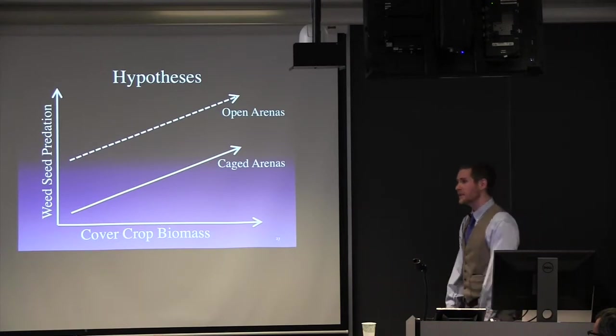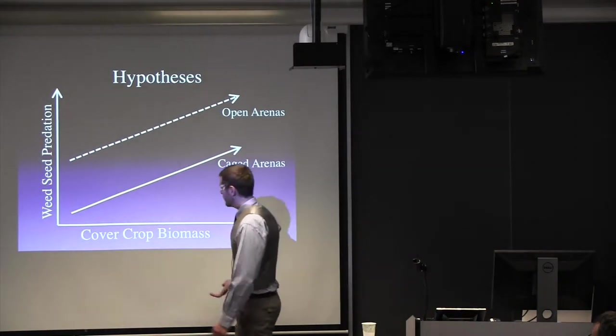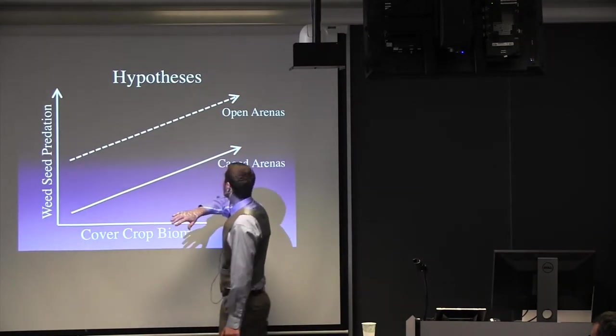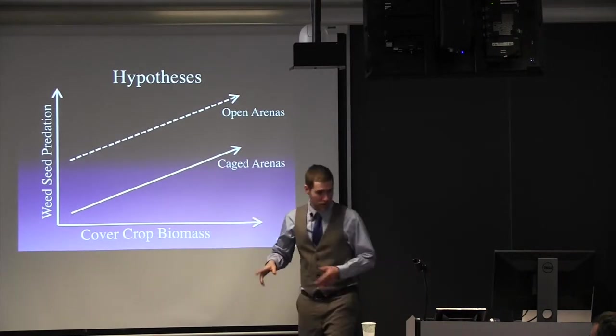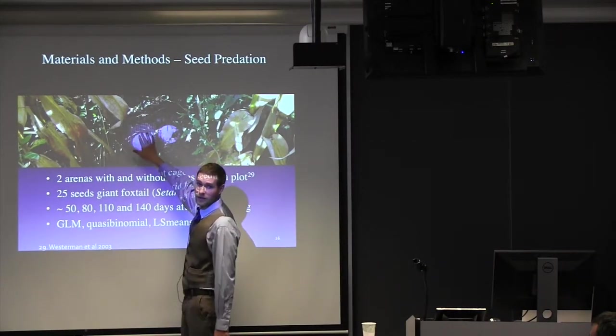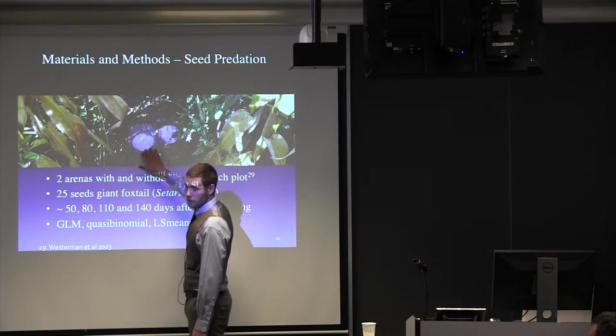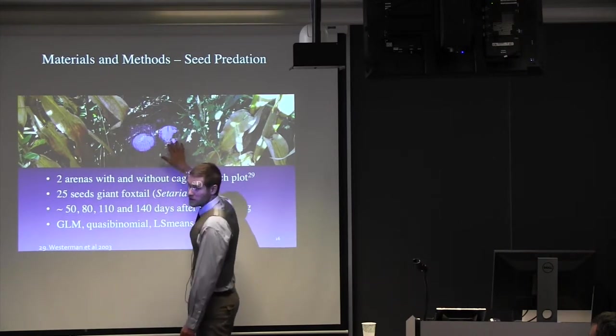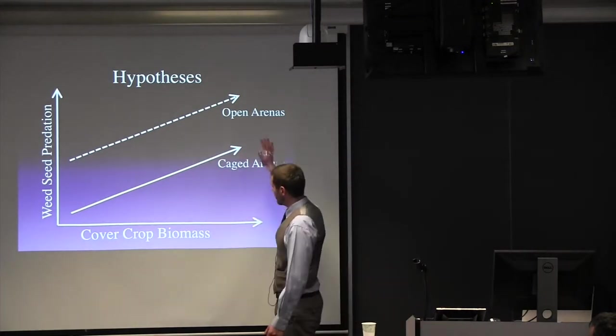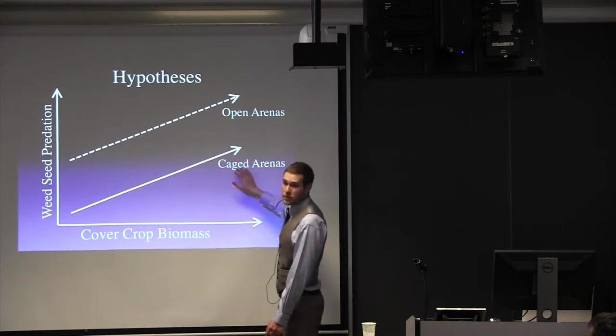So we have two main hypotheses here illustrated by this graph. In general, what we expected to see was that as cover crop biomass increased, we would see an increase in weed seed predation by vertebrates and invertebrates. So I should go back a slide because I forgot to explain. And so you can see one of these has a cage on top. That's to keep out anything with a spine. So seeds from this arena, we can say, are invertebrate only. And seeds that were eaten on this one, we can say, are vertebrates and invertebrates. So we expected predation to increase as cover crop biomass increased. And we expected to see more predation on open seed arenas than ones with cages on them.